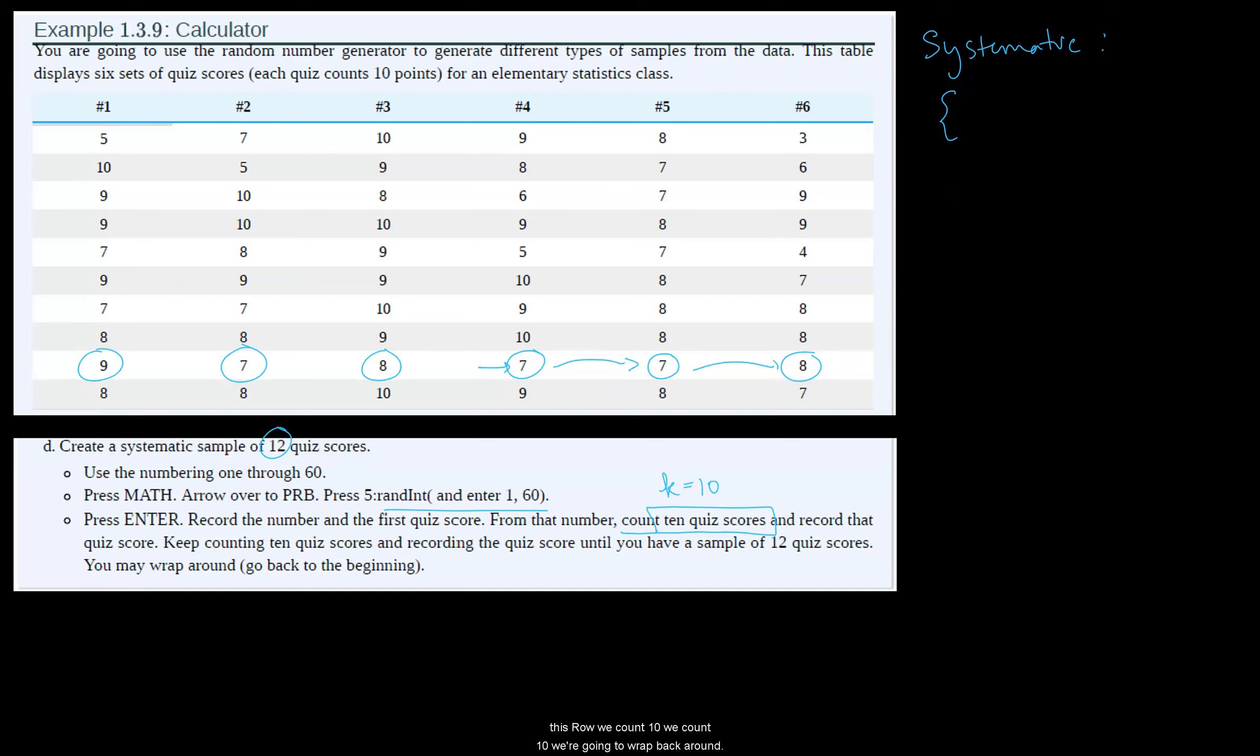So we count 10. We count 10. We're going to wrap back around. Count 10. Count 10. Count 10. And then to get our next 6, from this 8 we count 1, 2, 3, 4, 5, 6, 7, 8, 9. But we're not going to take 7. We're going to jump down to the next number.